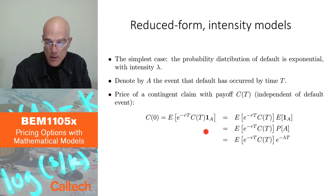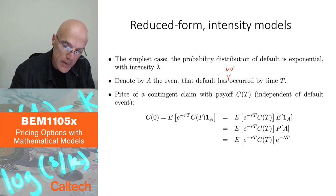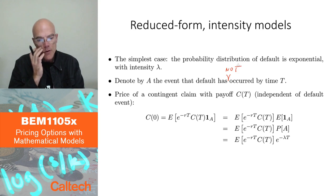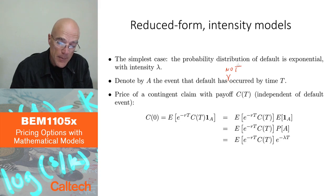Actually, this is not quite correct because I'm multiplying here by one, and I should multiply by one if the default does not happen. So it should be has not occurred, right? Let's say we assume that A is the event that the default has not occurred by time T. Then I'm assuming that I get C(T) if the default has not occurred, in which case this is one and I just get the full amount. But if the default does occur, then I'm going to assume that I get zero.